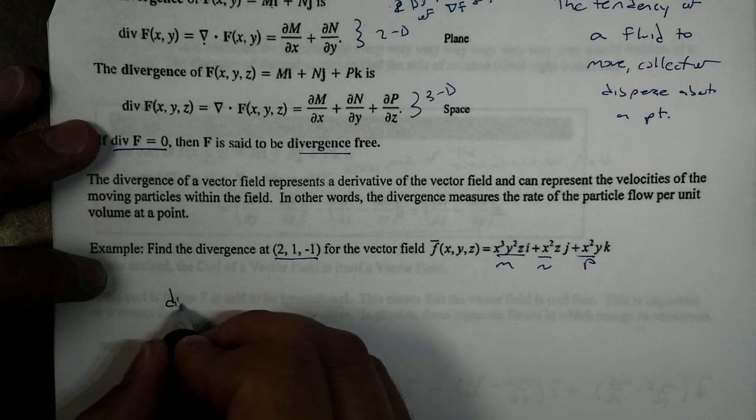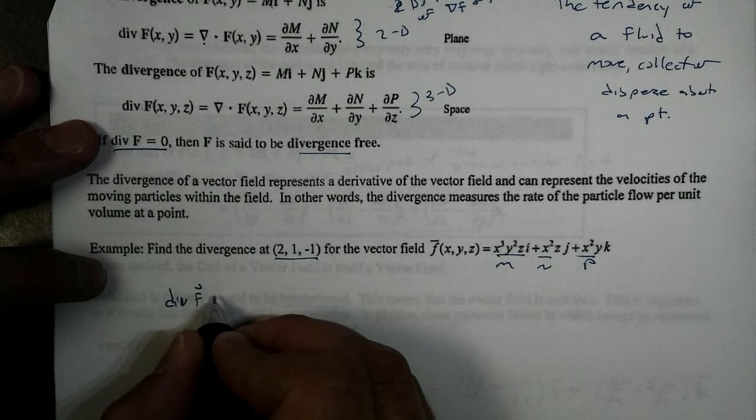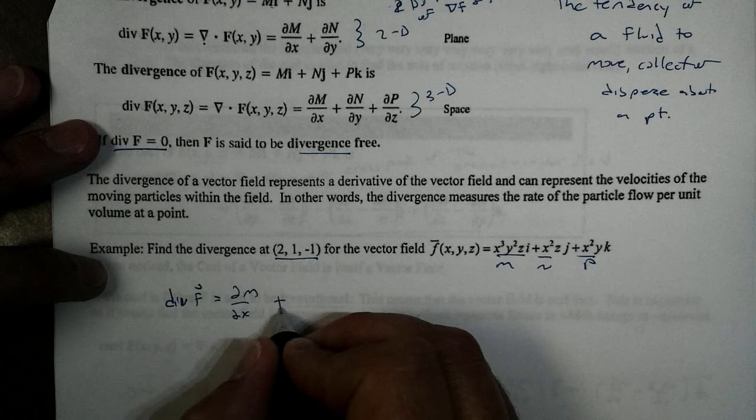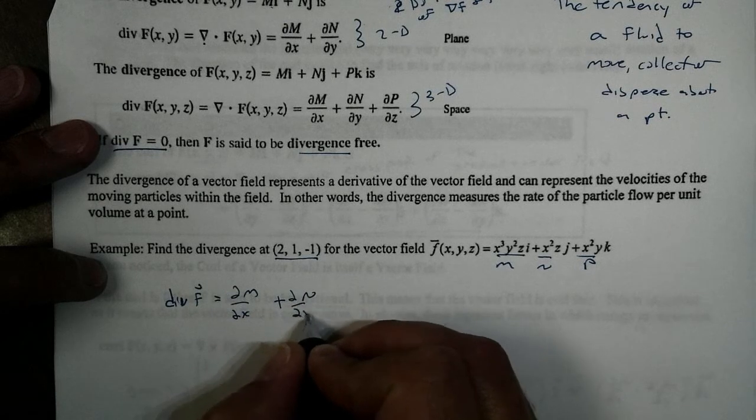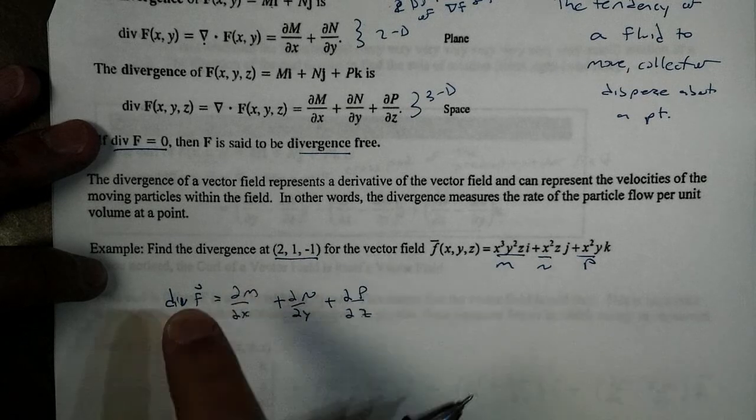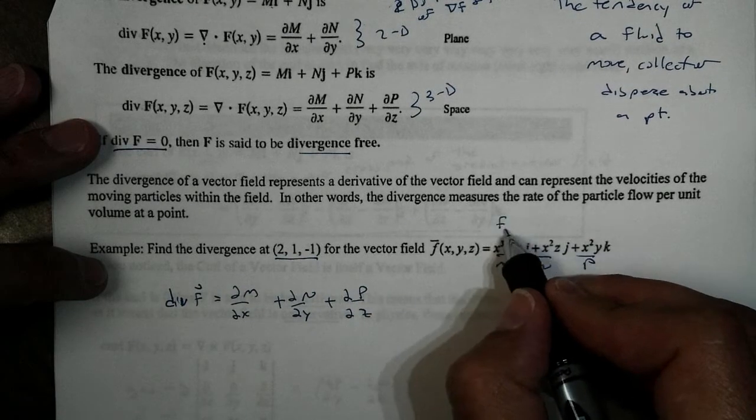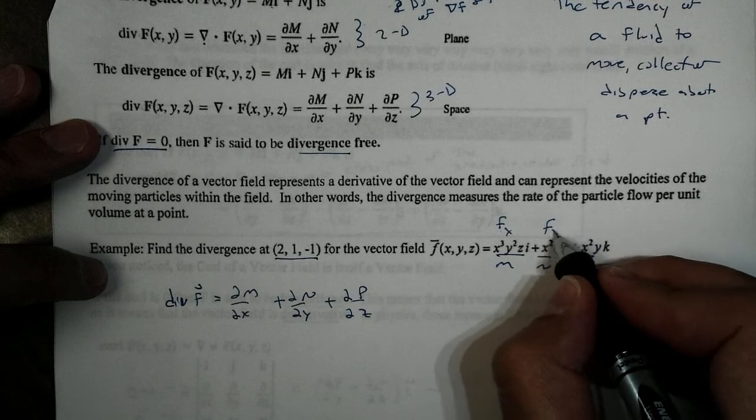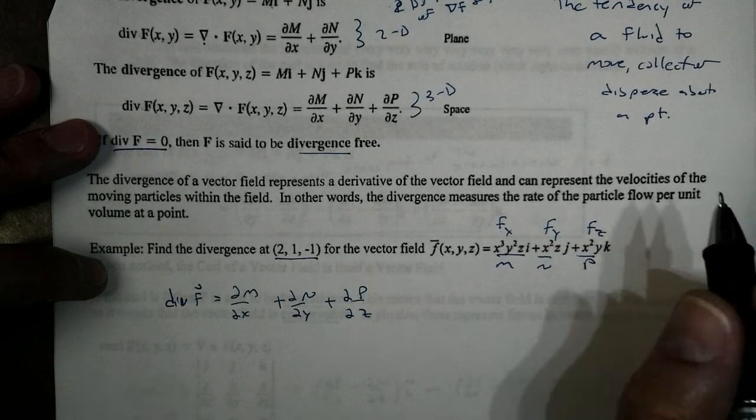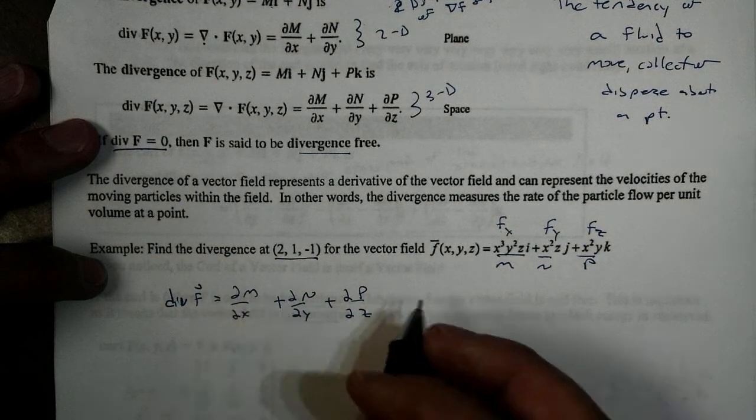So, my rule to get the divergence of F, my rule is the partial of M with respect to x plus the partial of N with respect to y plus the partial of P with respect to z. Now, I think these are pretty easy to remember because this is already my partial with respect to x, my partial with respect to y, and my partial with respect to z.